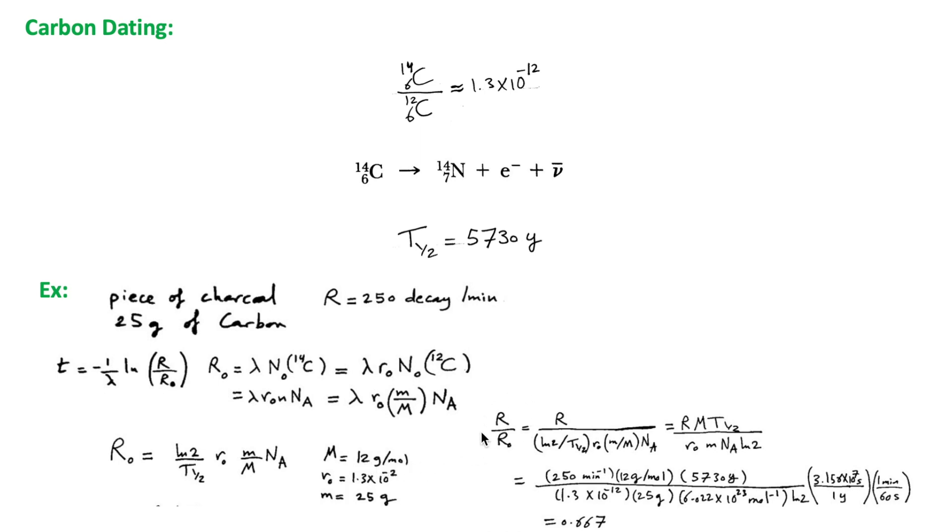We now evaluate this ratio, which is R over R naught, and we get this expression. We substitute for the activity when the piece of charcoal was found, which is 250 decays per minute, and the half-life, and R naught here, and the mass of the carbon.